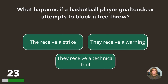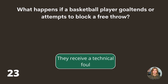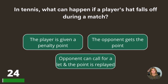What happens if a basketball player goaltends or attempts to block a free throw — they receive a strike, they receive a warning, or they receive a technical foul? In tennis, what can happen if a player's hat falls off during a match — the player is given a penalty point, the opponent gets the point, or the opponent can call for a let and the point is replayed?